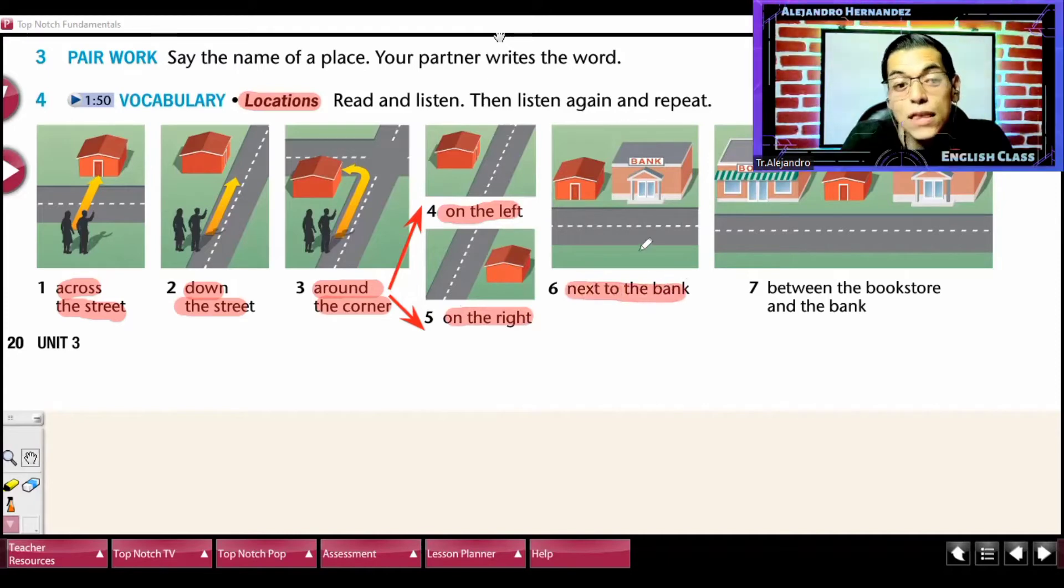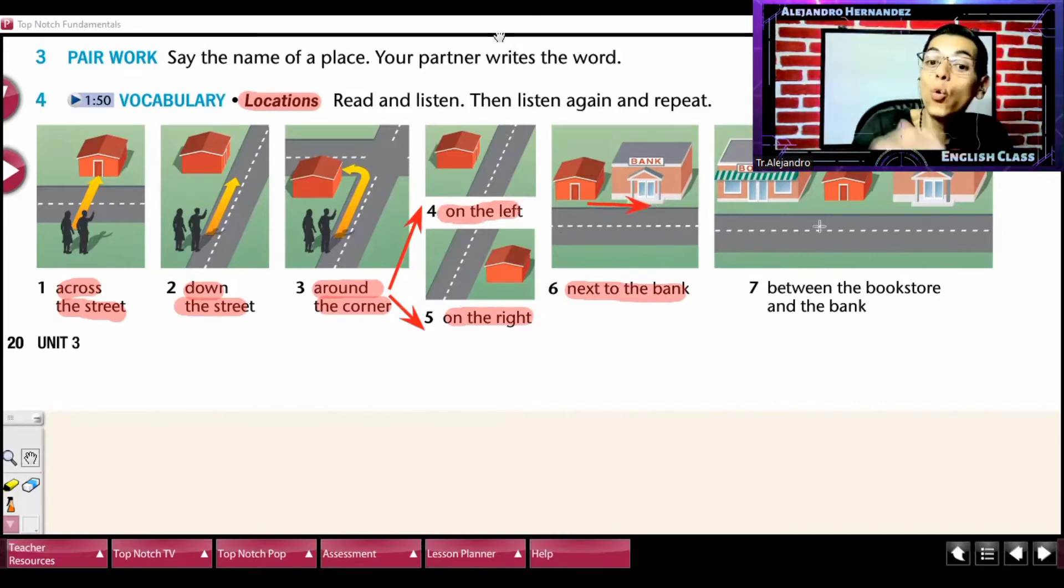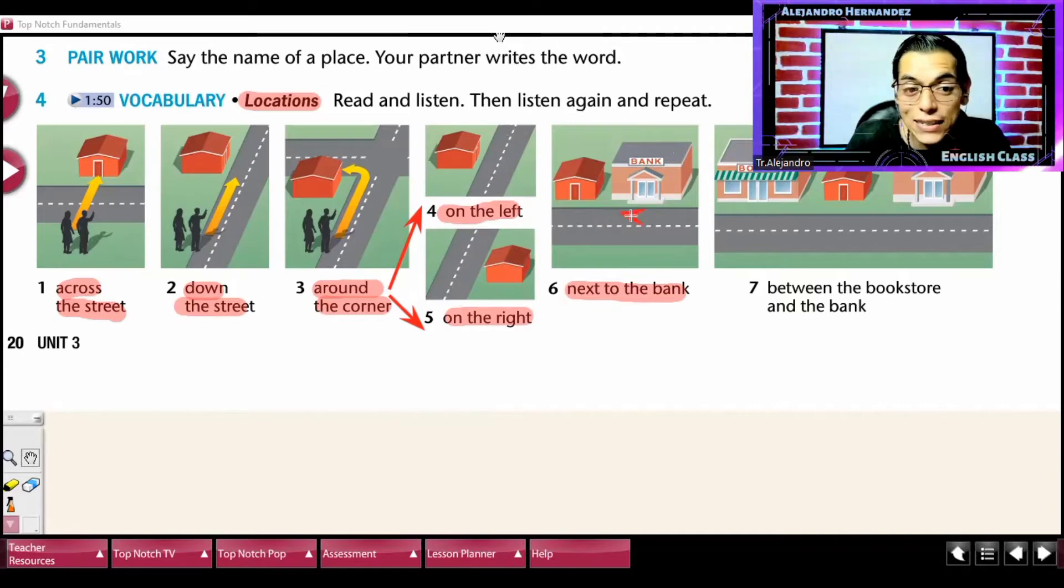Next to, next to the bank es al lado de, ¿no? Al lado de un lugar en particular. En este caso, it is next to, next to the bank.